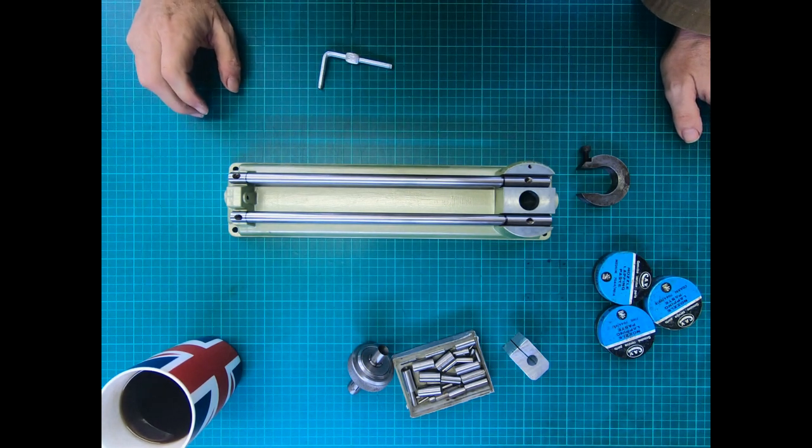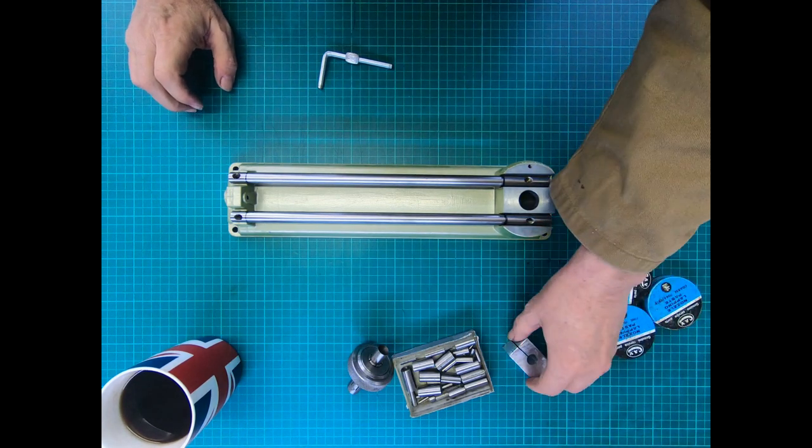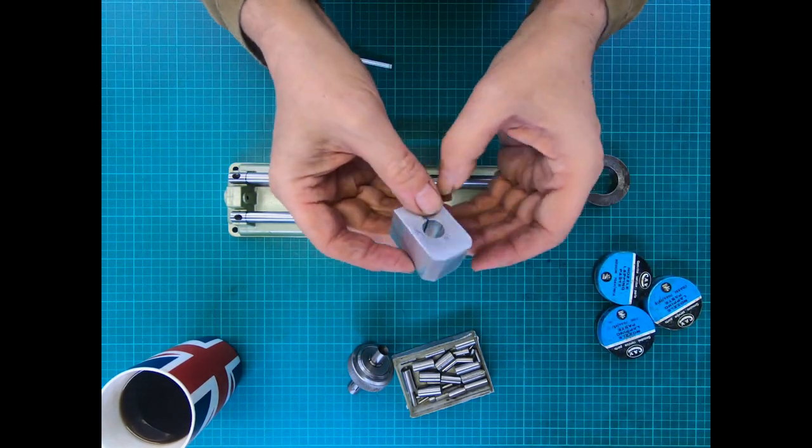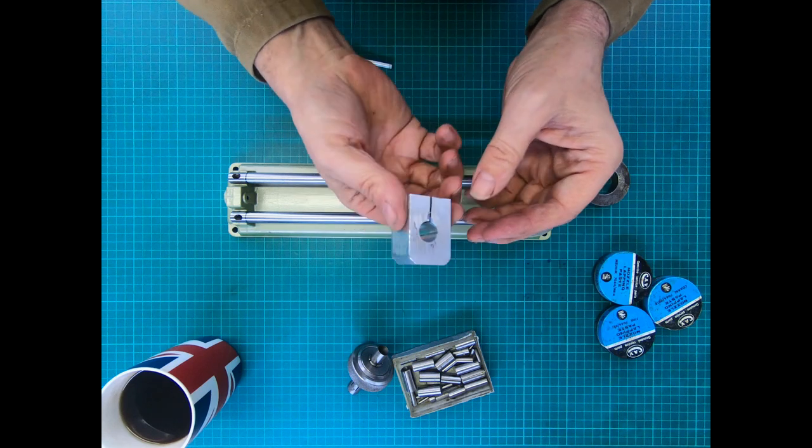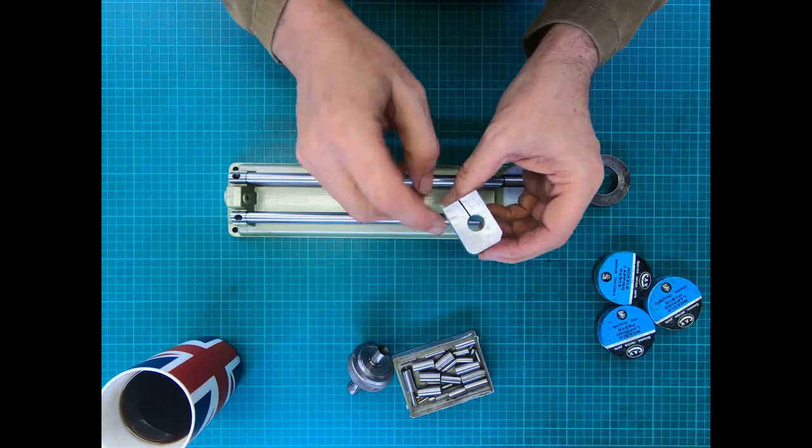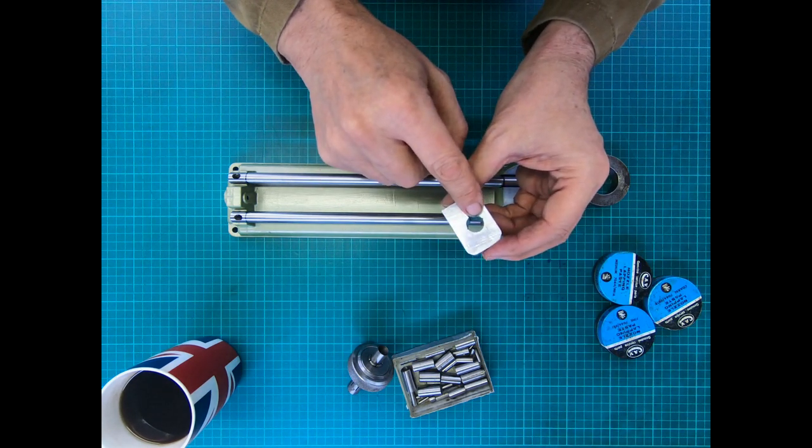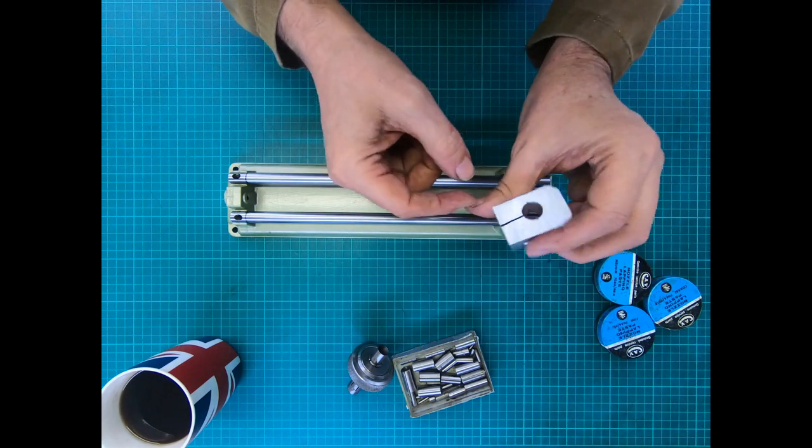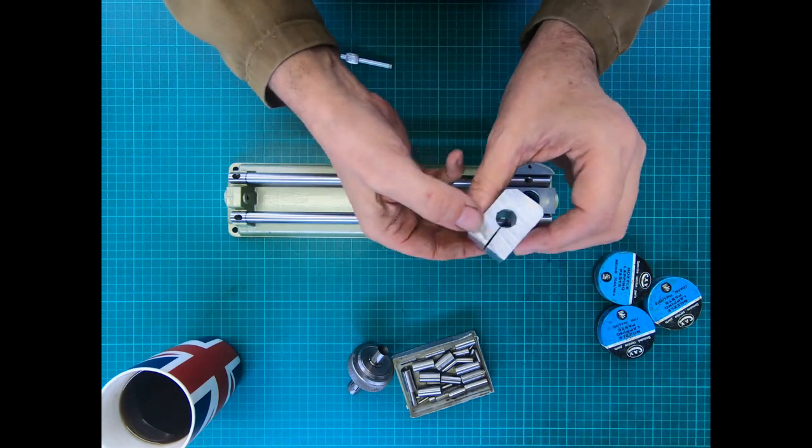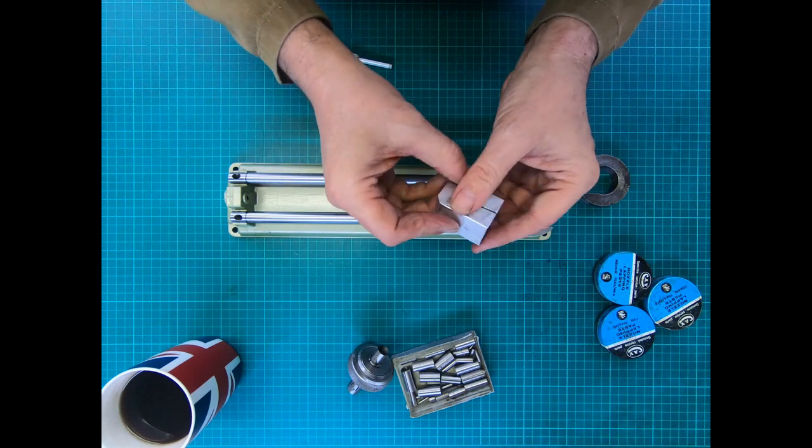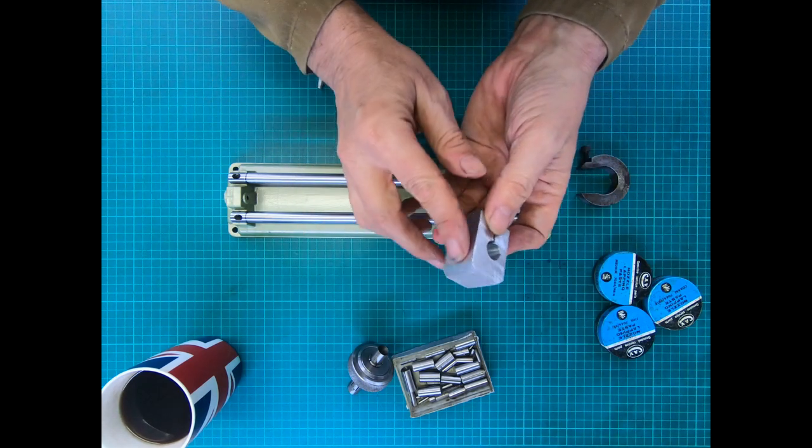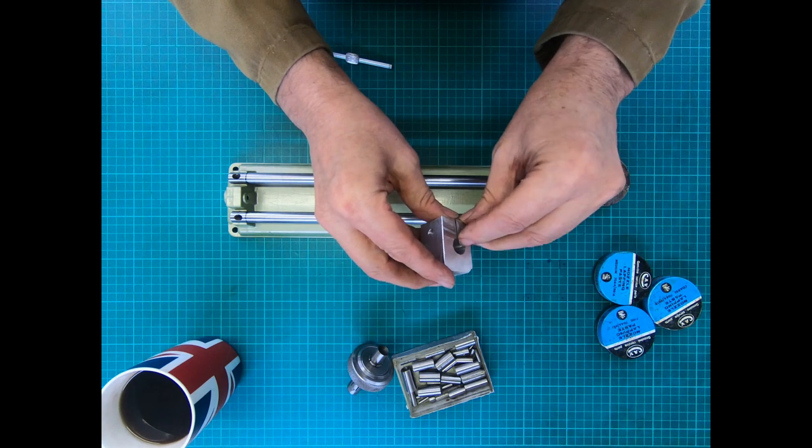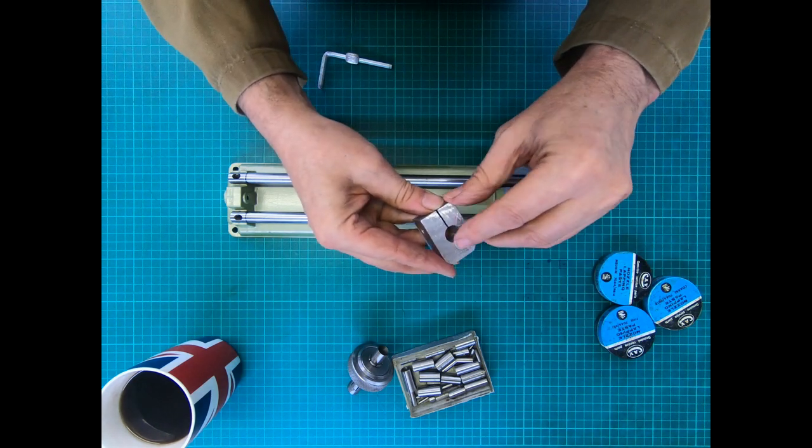So what I've done is I've made a little lapping block. All I've done is just got a block of aluminum, bored a hole—I put it in the four-jaw, bored a hole in there—cut a little slot there with a handsaw, filed off the edges, and I filed a couple of little grooves in there.